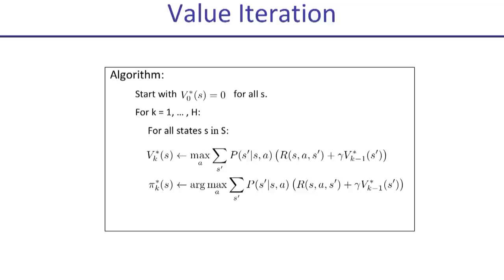Here's the full value iteration algorithm. We initialize values equal to zero — that's for zero time steps to go. Then we iterate for K from one through H. For each state, we compute the value for that state with K time steps to go using the Bellman equation, and also compute the optimal policy for K time steps to go as the argmax of the same equation. This equation is called the value update, Bellman update, or Bellman backup.